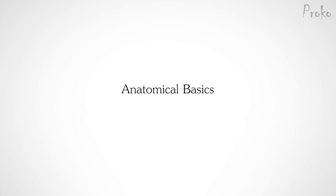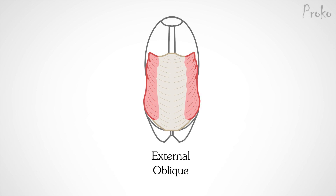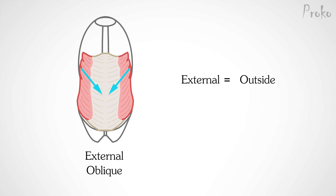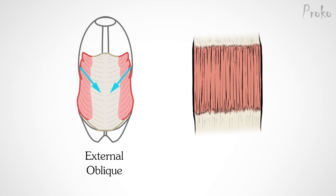The name external oblique refers to the muscle's position — being on the outside, contrary to the internal oblique which is on the inside — and it refers to the diagonal angle of the muscle fibers. External means outside, oblique means diagonal. The external oblique is a sheet muscle, which means it's large and thin, and its muscle fibers are parallel.